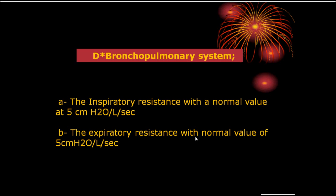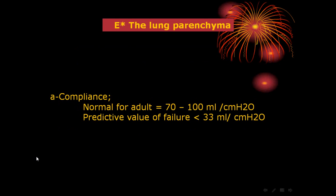For the bronchopulmonary system, we measure inspiratory and expiratory resistance. The expiratory resistance is especially important in patients with COPD or bronchial asthma — a high expiratory resistance creates a large load on the patient and may cause failure. Compliance is also critical; in patients with ARDS, pneumonia, or heart failure, compliance will be low. If compliance is less than 33 ml/cmH2O, it is difficult to wean the patient, and the underlying cause must be treated before liberating the patient from mechanical ventilation.